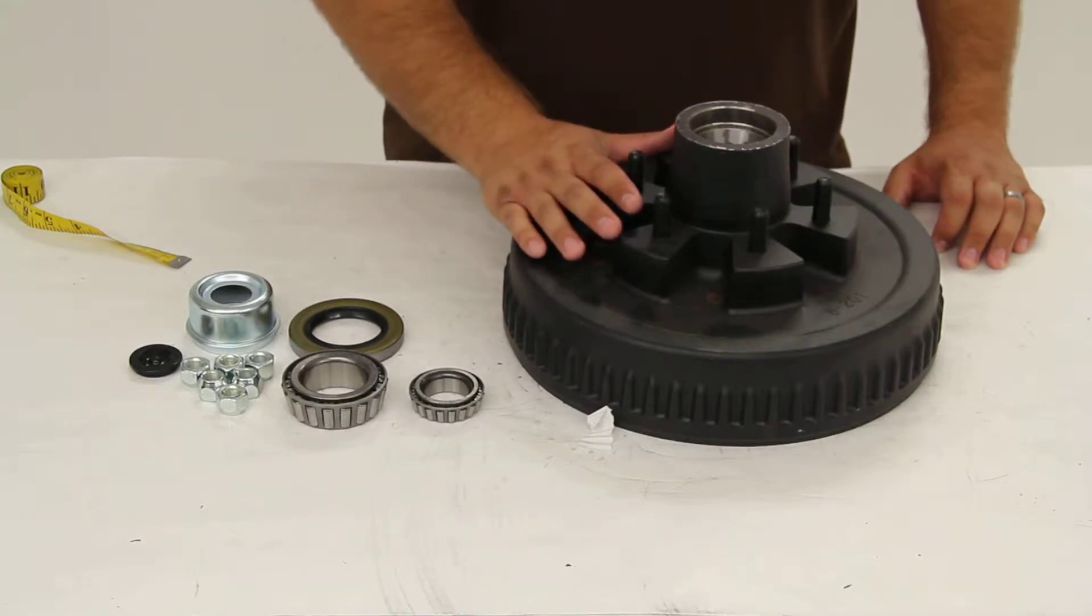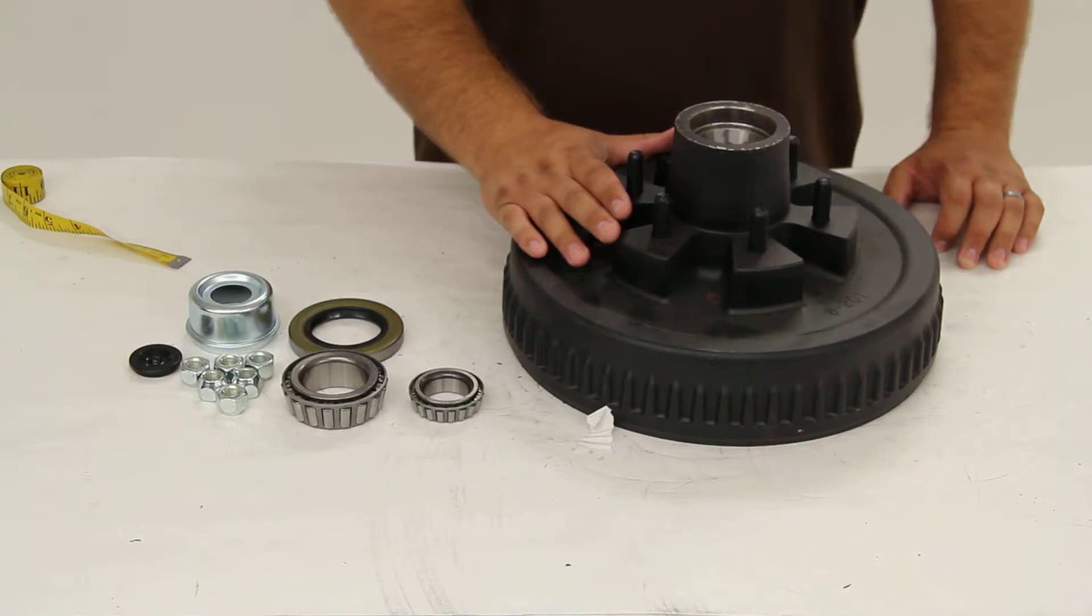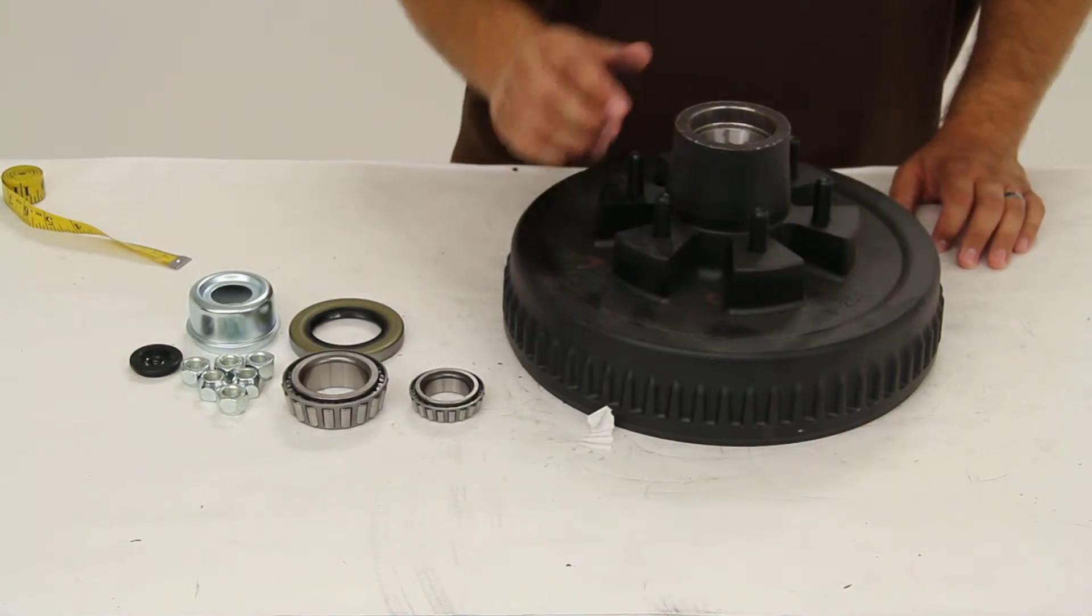This hub and drum assembly is designed to work on 5,200 pound axles that use a 2 1/8 or 2 1/4 inch inside diameter grease seal. It's got a 6 on 5 1/2 inch bolt pattern.